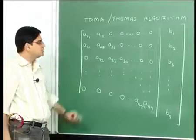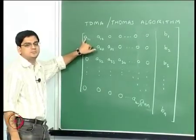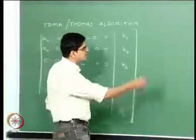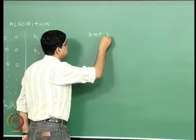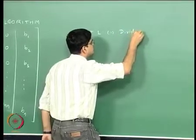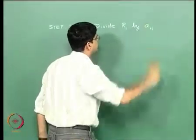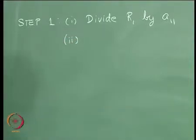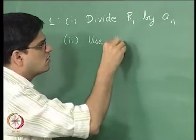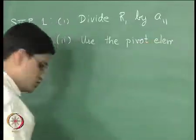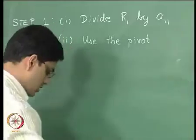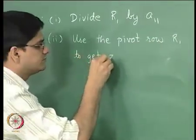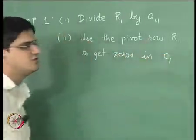The first step in Thomas algorithm is to make this pivot element equal to 1 by dividing the entire row by that particular element. So we will write Step 1, Part 1: divide R1 by A11. The next step, as in Gauss elimination, is to use the pivot row R1 to get zeros in column 1 below the diagonal.